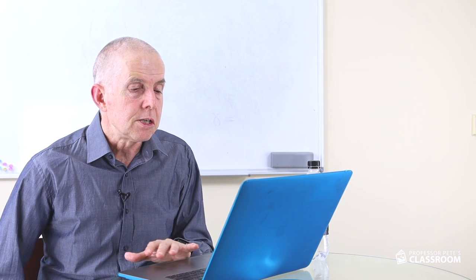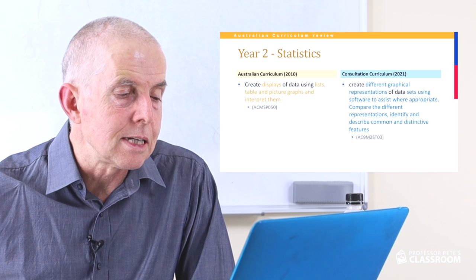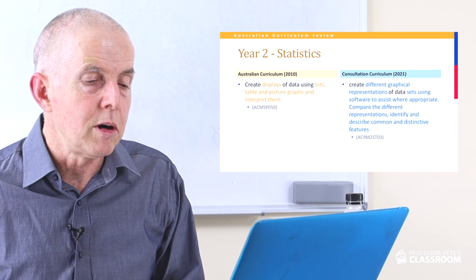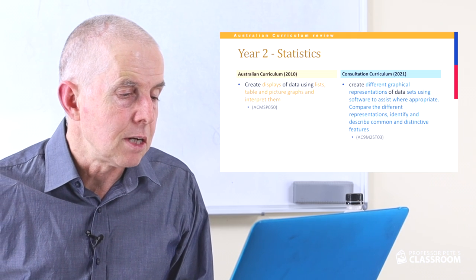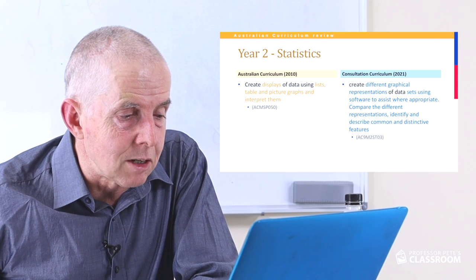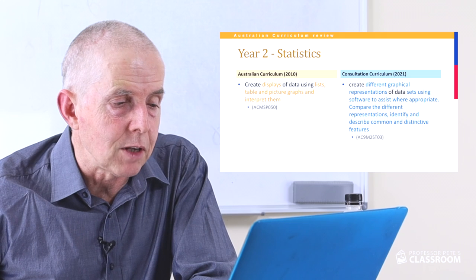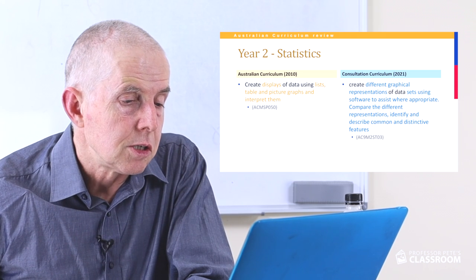Statistics descriptor three has been greatly expanded: creating representations of data, using software where appropriate, comparing different representations, and identifying and describing common and distinctive features. The extra language is very helpful. One comment: specific representations — lists, tables and picture graphs — are no longer stated explicitly. I think those should still be included, perhaps as examples, because it helps teachers think about what they could be doing and gives useful concrete direction.